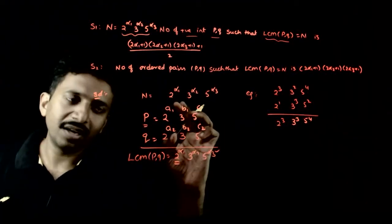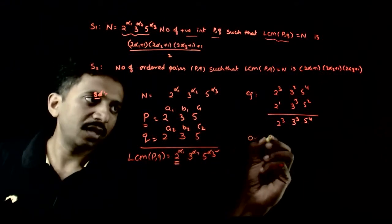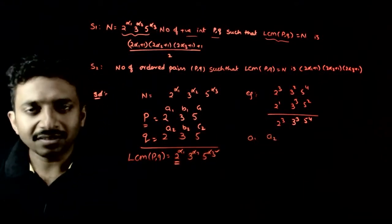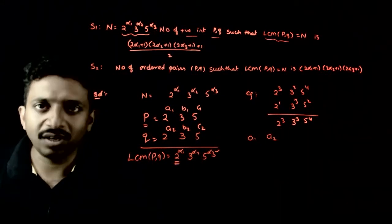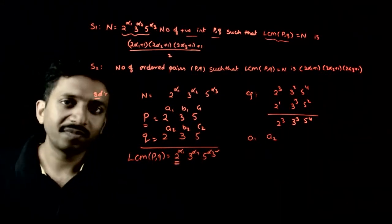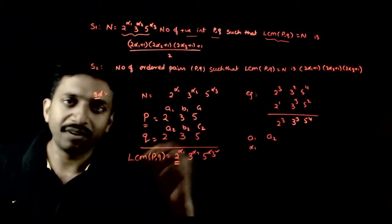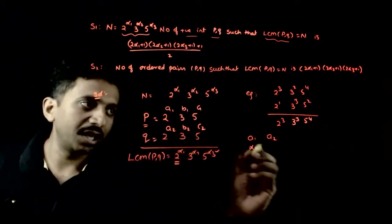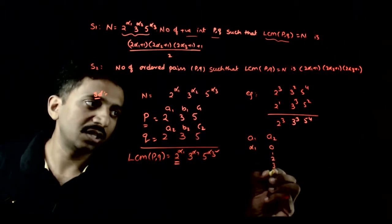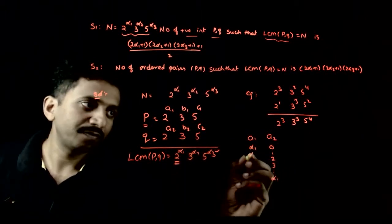So a1 and a2 must be chosen such that the highest of these two equals α1. If a1 = α1, then a2 can range from 0, 1, 2, 3, ... up to α1 — that gives α1+1 choices for a2.